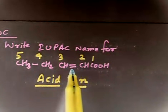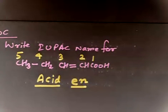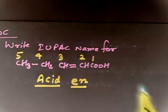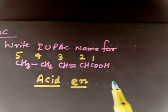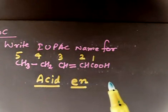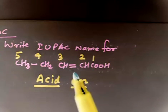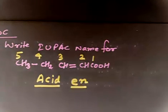And position number 2, you have ene and this is oic acid. So, you can say, acid is written as oic. So, this is pentanoic acid. And you have to put the position of double bond also. So, what should be the name?